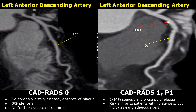we can see a small hyperdense calcified plaque in the left anterior descending artery in its proximal segment. This small plaque is causing a stenosis of less than 25%. When the stenosis is between 1 and 24%, it is graded as CADRADS-1, indicating early atherosclerosis.